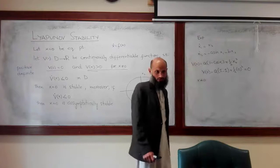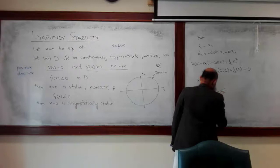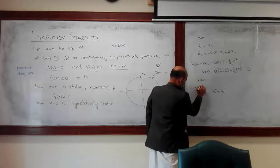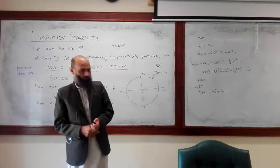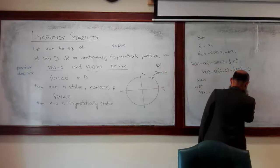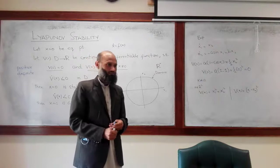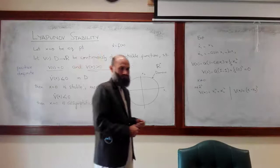For another example: V(x) = x1² + x2² for x belonging to two-dimensional space. Is it a positive definite function? Yes. For x = 0, this function is 0; for x ≠ 0, it is always positive. So it is positive definite.